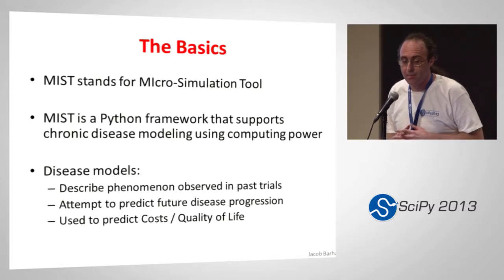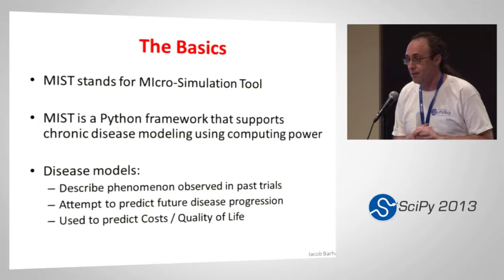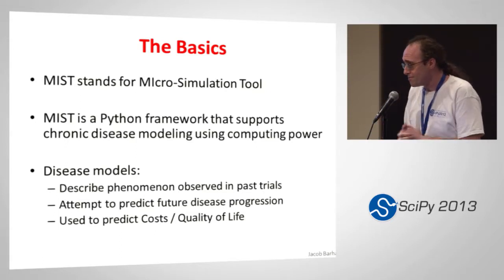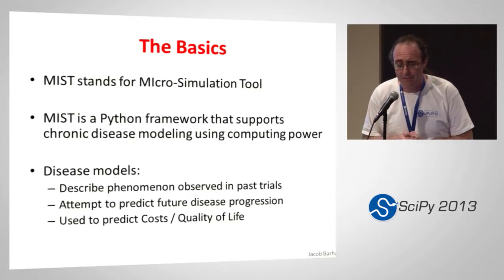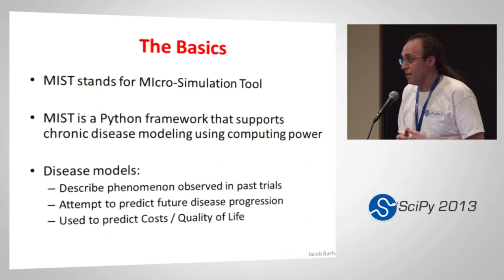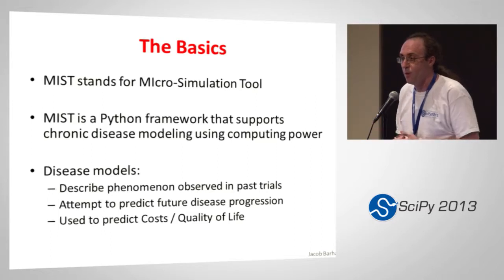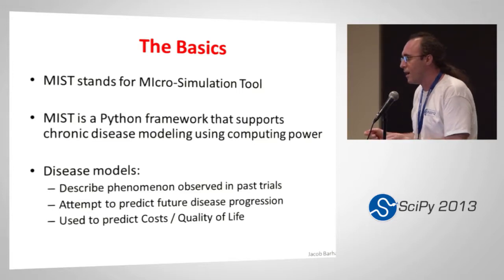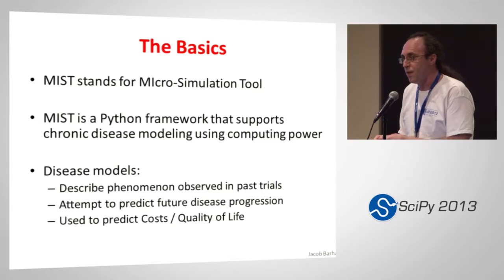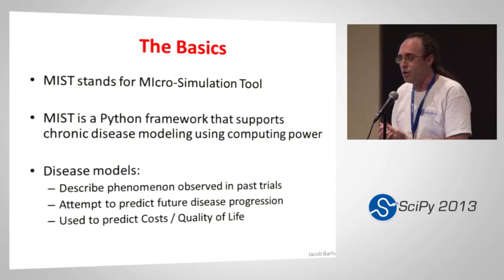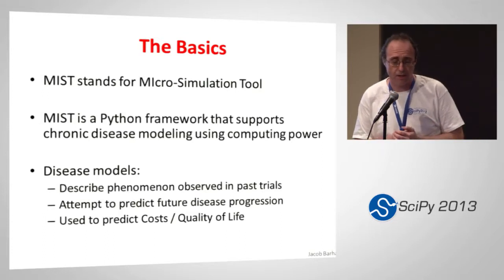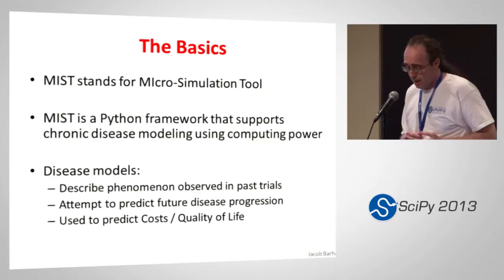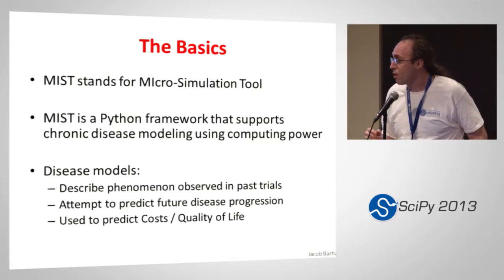MIST is a Python framework that supports chronic disease modeling. It uses computing power to help with the microsimulation. Disease models describe phenomena that are observed in a clinical trial. They usually describe it as some sort of equation, a Markov model, some sort of function that maps inputs to outputs. A lot of times we take this function and apply it to other populations to see what might happen to them in the future. We use it to predict costs and quality of life information for a population. I will be talking about chronic disease models.